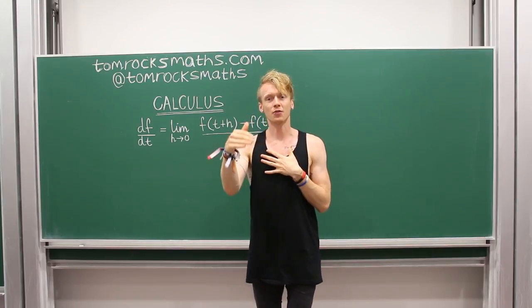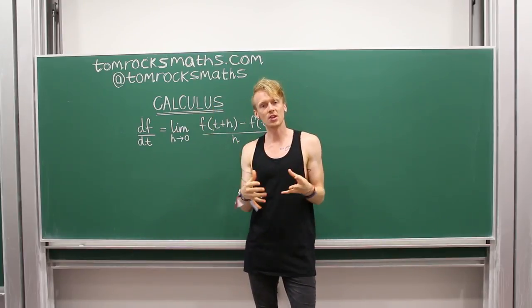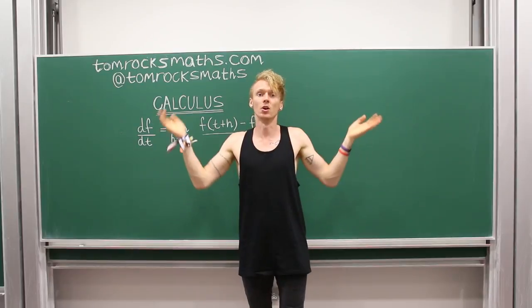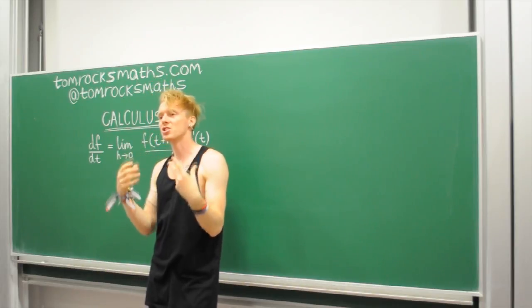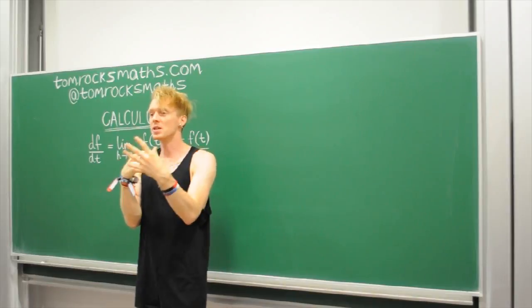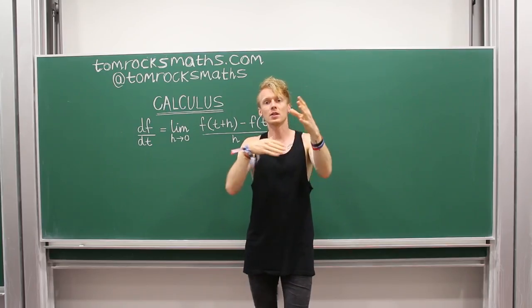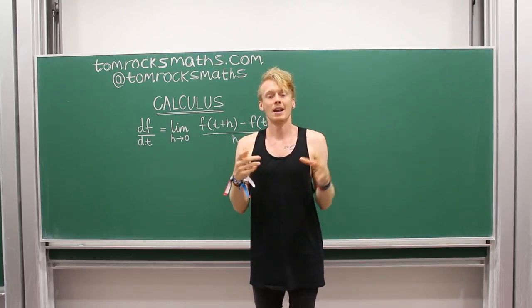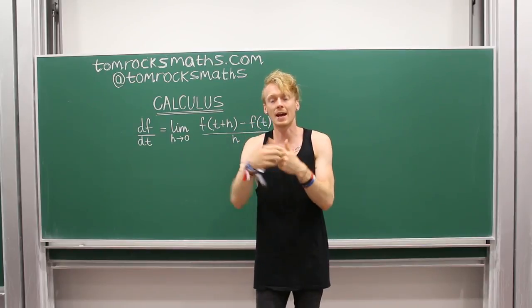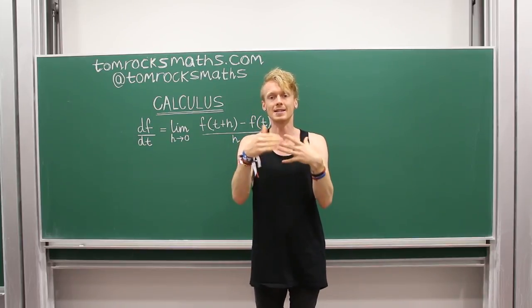But we of course know that at different points around that circuit, Lewis Hamilton is not going 100 miles an hour. That's his average over the whole circuit, because there might be a hairpin turn where he's going maybe 30 or 40, and then on the straight, maybe he reaches 200. So his speed is constantly changing. You might think that instead of measuring the whole lap, let's just measure the distance over a 10 second period or a one second period, and you would get better and better estimates for his instantaneous speed.